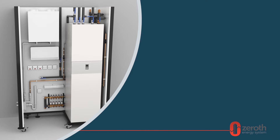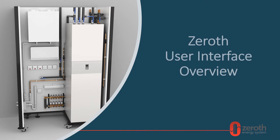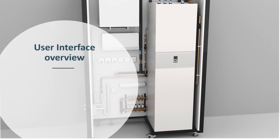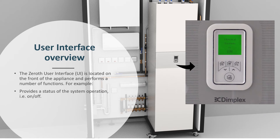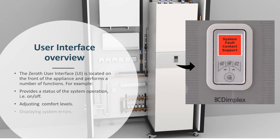Welcome to this Glendimplex Heating and Ventilation information video on the Xeroth User Interface. The Xeroth User Interface is located on the front of the appliance and performs a number of functions — for example, it provides the status of the system operation, i.e. on and off, adjusting comfort levels, and displaying system errors.